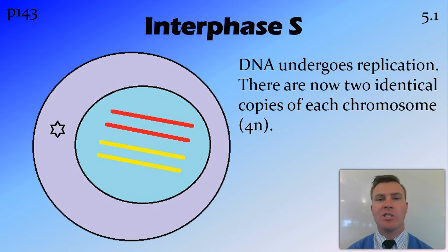During interphase S, which occurs just prior to mitosis, the DNA within the nucleus undergoes replication. So this means that each of those strands of DNA is copied exactly, creating two times the amount of strands that you had. So for human cells, this is going from 46 strands of DNA, or chromosomes, to 92 chromosomes.